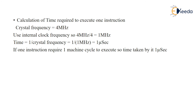Some instructions require one machine cycle and some require two machine cycles. For example, the MOVWF instruction requires only one machine cycle, so it executes within one machine cycle and the execution time is 1 microsecond. If you choose a higher crystal frequency like 10 MHz, the time gets further reduced. Instructions like BTFSS are bit-addressable instructions that require two machine cycles, so the execution time is 2 × 1 microsecond = 2 microseconds.